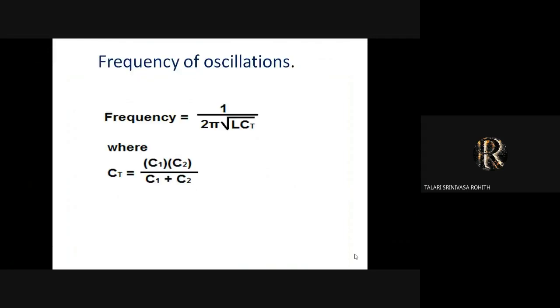From here onwards, Rahul will take over the session. Now, the frequency of oscillation is given by 1 over 2π root LC, where C equals C1 times C2 divided by C1 plus C2.